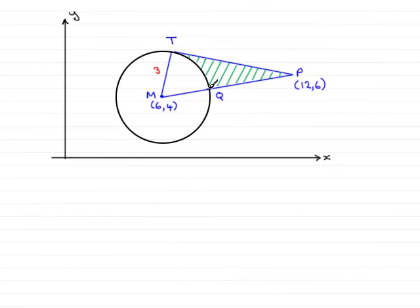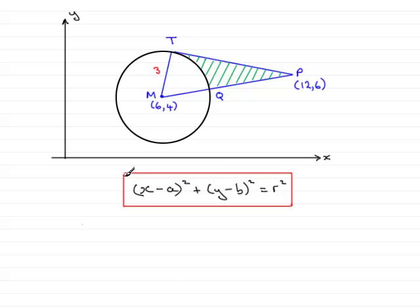Here we have the circle with centre M(6, 4) and radius 3, and we're asked to give the equation of the circle in this particular format. Hopefully you're familiar with this format, but I'll just explain what it is. A and B are the x and y coordinates respectively of the centre of the circle, and R is the radius of the circle.